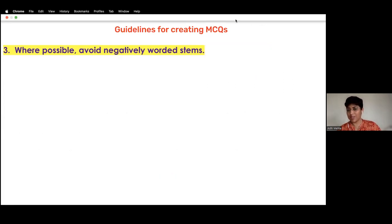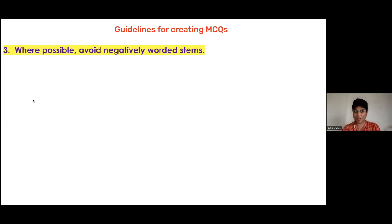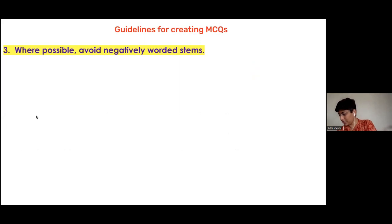Rule three: where possible, avoid negatively worded stems. A negatively worded stem contains words like 'not,' 'wouldn't,' 'didn't,' or 'never' — a negation in the stem.